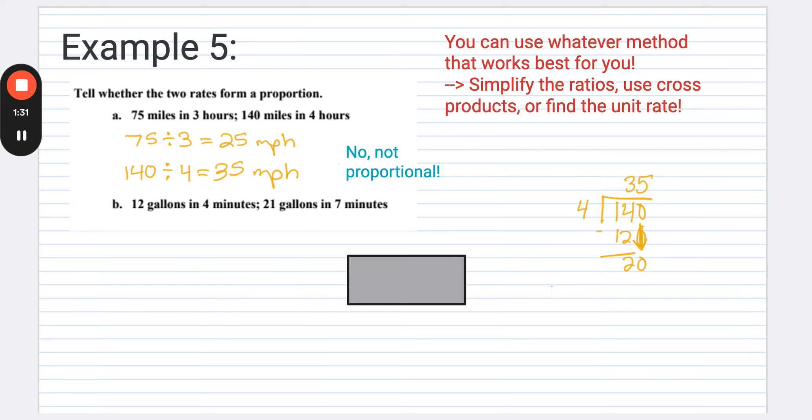So for the next one, same idea. This one, I actually think set up really nice again to use unit rates. So we'll go ahead and just do that for this one as well. So we got 12 gallons in four minutes. So we're going to do 12 divided by four, which is going to be three gallons per minute. And then if we do the same thing for our second rate, 21 gallons in seven minutes, again, 21 divided by seven is going to be three. So again, three gallons per minute. So because these are the same, yes, it's going to be proportional.